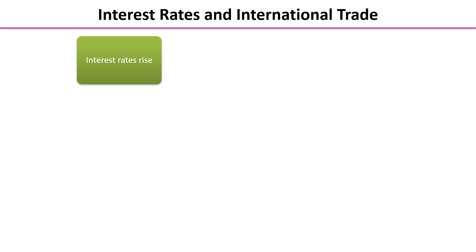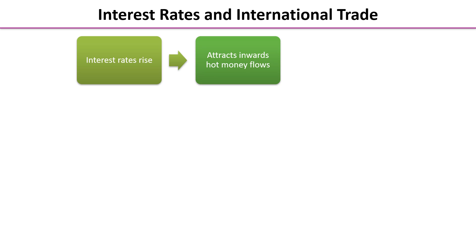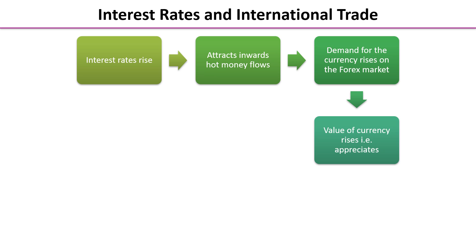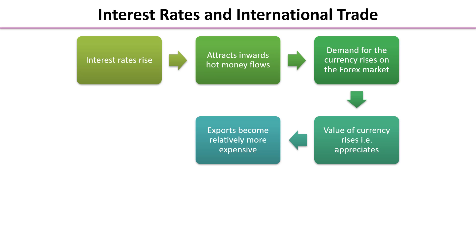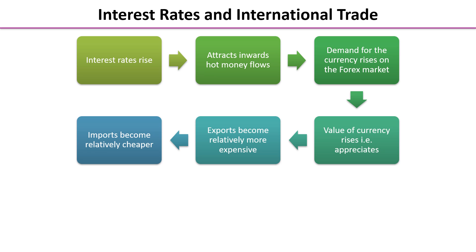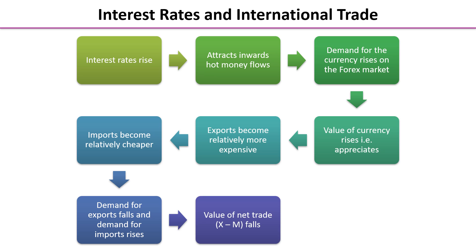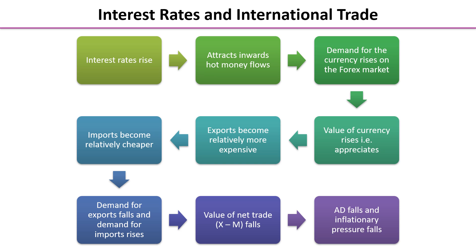So with interest rates rising, that attracts inward hot money flows, demand for the currency rises on forex, and the value of the currency rises or appreciates. This means exports become relatively more expensive than before, however imports become relatively cheaper. Demand for UK exports will fall — foreigners will buy fewer exports — while demand for imports rises. Therefore the value of net trade (X minus M) in the aggregate demand formula will fall, aggregate demand falls or shifts to the left, and inflationary pressure falls.